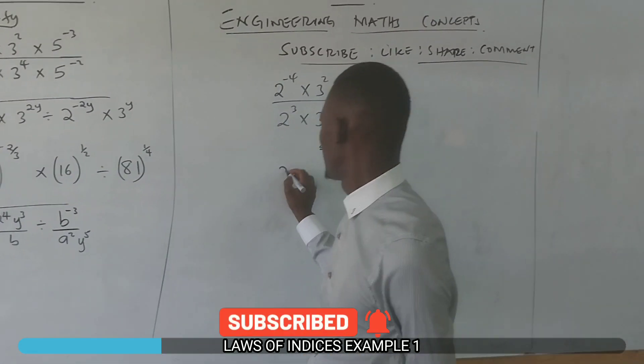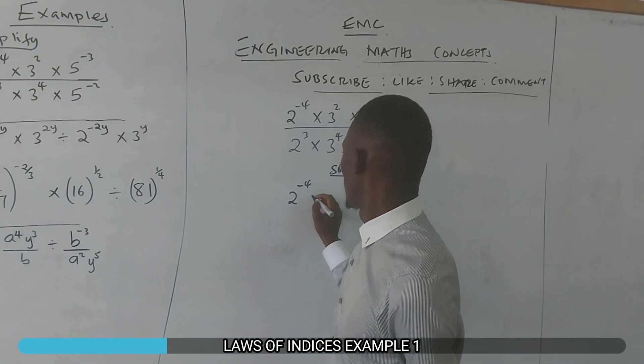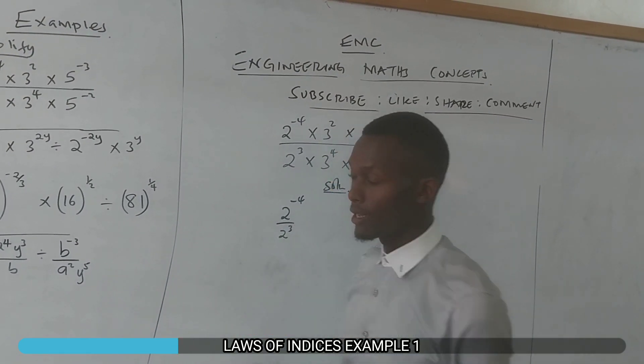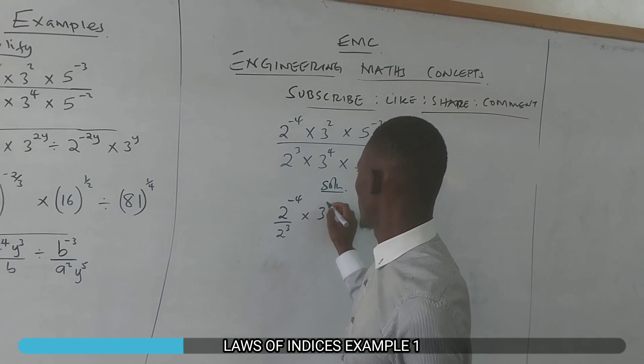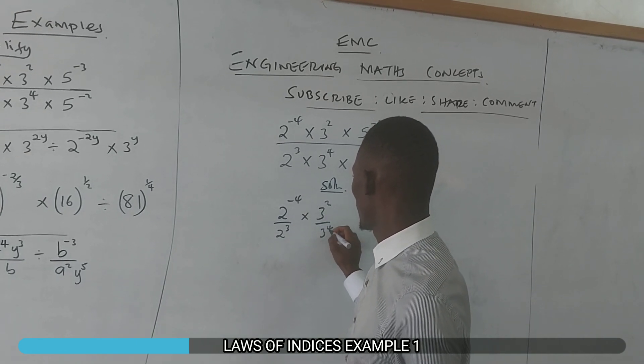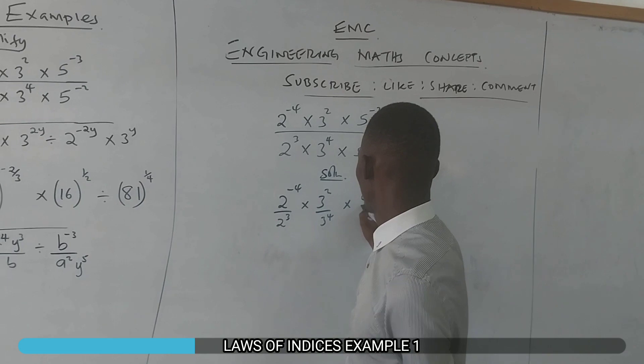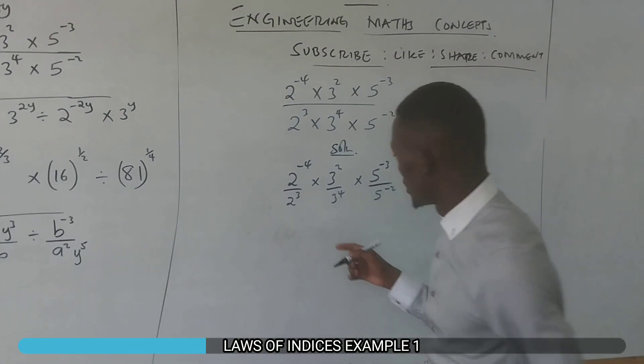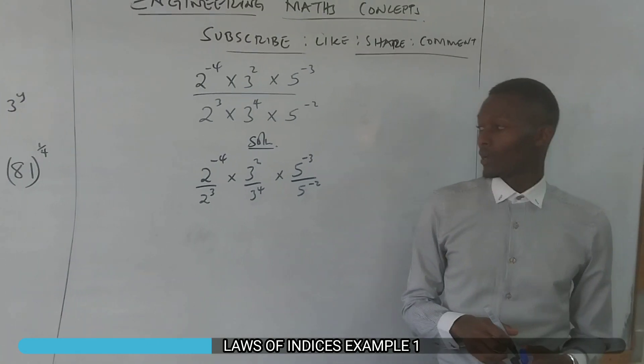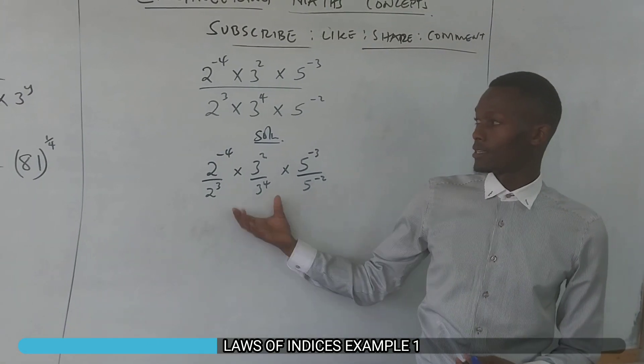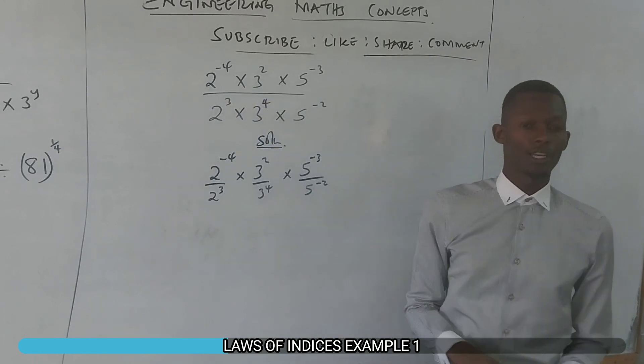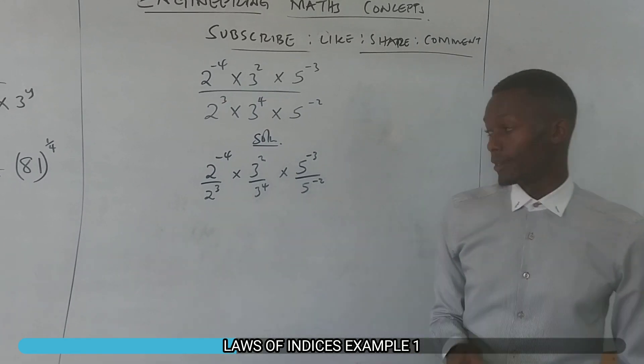So we have 2^-4 divided by 2^3, times 3^2 divided by 3^4, times 5^-3 divided by 5^-2. These expressions are equivalent. When you write it this way, as long as they're joined by multiplication, they mean one and the same thing.